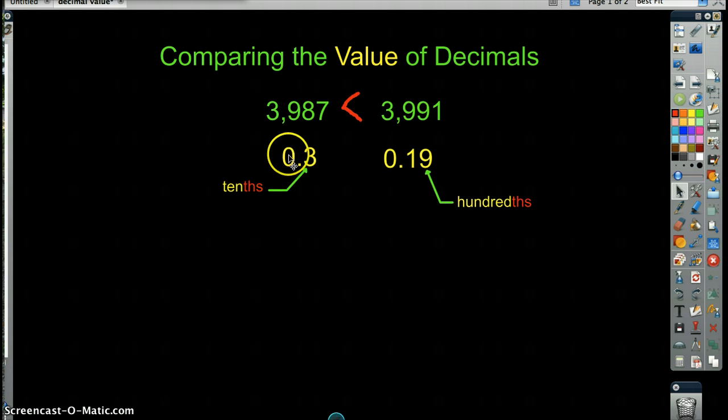After we look at the whole numbers, we move to the right, just as we did up here. We keep moving to the right. This has three-tenths in it, while this number over here has one-tenth in it. Three is greater than one. And so, this whole number over here, this decimal number, three-tenths, is greater than nineteen-hundredths, because it has more tenths than nineteen-hundredths does.